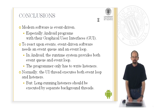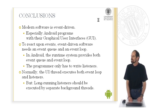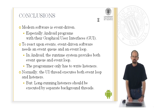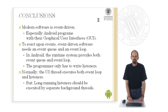So what did we learn in this unit? We learned that modern software is event-driven, which refers especially to Android programs with their graphical user interfaces. To react upon events, like for example clicks on buttons, we have to have an event queue and an event loop. This queue and this loop are implemented by the Android runtime system so that you as the programmer have only to implement the listeners, the reactions to the events themselves. In the normal case, it is the UI thread which executes both the event loop and the listeners. But if you have long-running listeners that need a long time to be executed, you should introduce separate background threads that execute these handlers. Thank you for your attention.